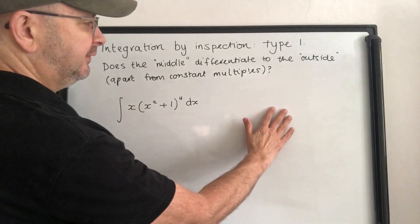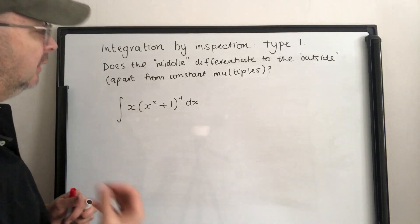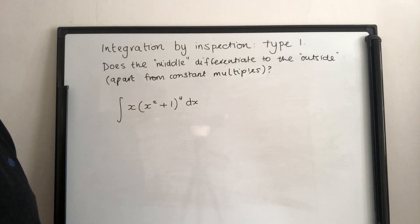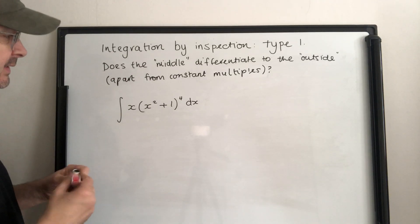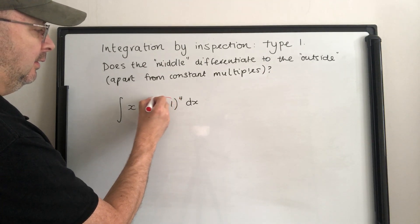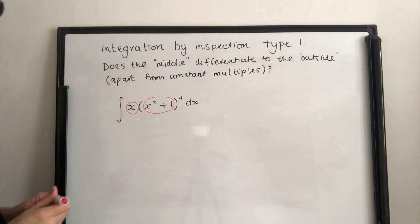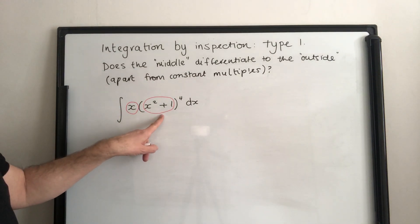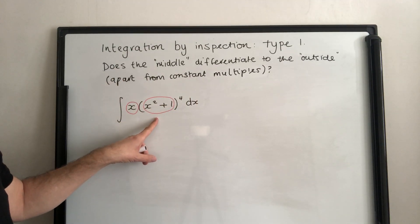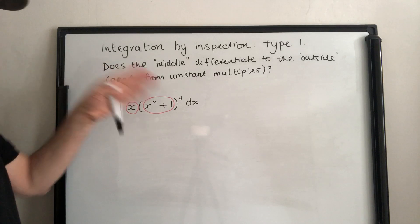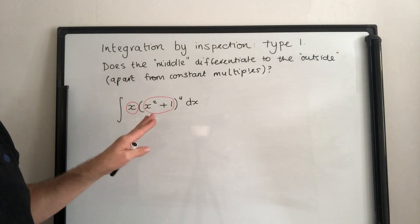The key question is: does the middle differentiate to the outside, apart from constant multiples? If you know your chain rule well enough you should be okay, but it will take time because it's quite difficult. So this is the middle and this is the outside. Does the middle differentiate to the outside? Well, that differentiates to 2x. Yes, it's fine because the 2 is the constant multiple and I can adjust for that. If there wasn't an x there I wouldn't be able to do it this way.